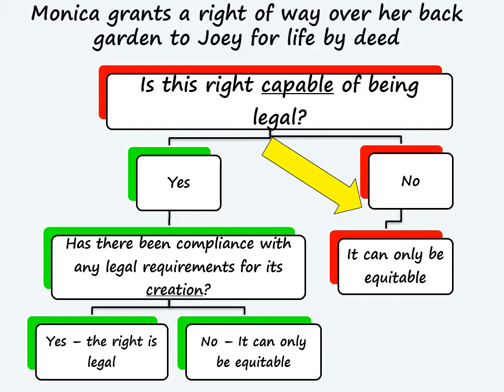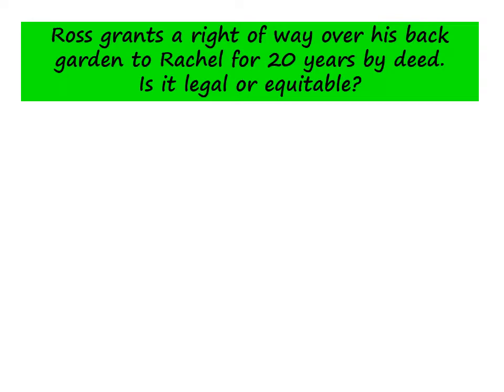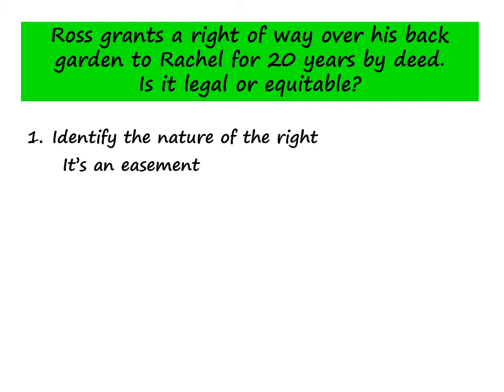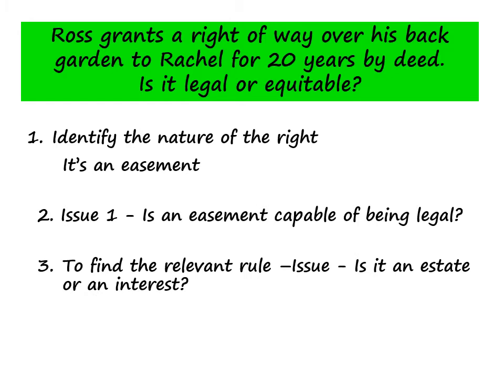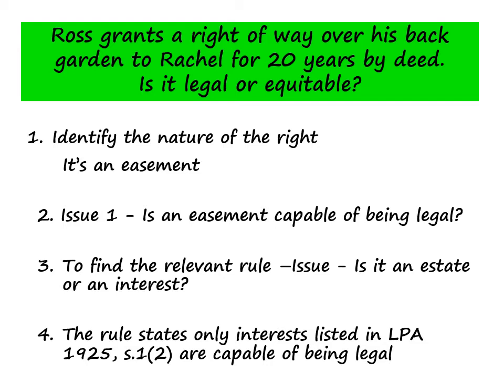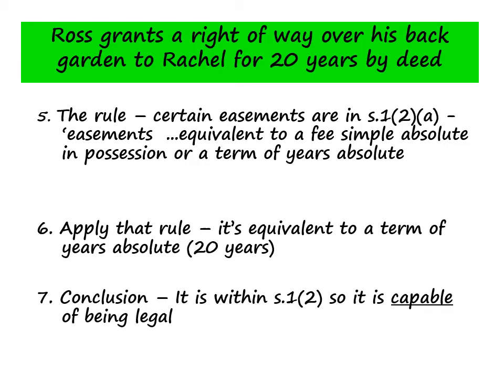Here's another example. Ross grants a right-of-way over his back garden to Rachel for 20 years by deed. Again, identify what type of right you've got — a right-of-way is an easement. The first issue is whether an easement is capable of being legal. It's an interest, so the rule is that only interests listed in section 1(2) are capable of being legal, and certain easements qualify — those equivalent to a fee simple absolute in possession or a term of years absolute.